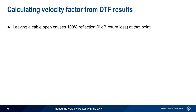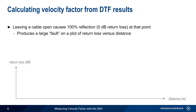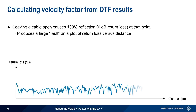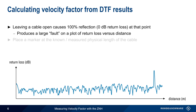When making a DTF measurement, this will produce a large fault or spike on a plot of return loss versus distance, as seen on the right side of the graph below. The velocity factor of this cable is determined by placing a marker at the known or measured physical length of the cable.